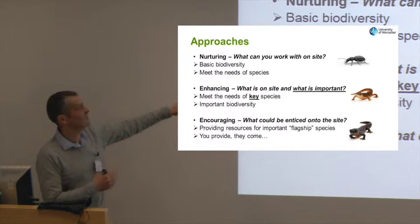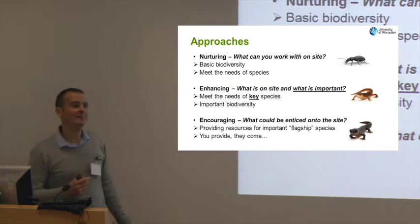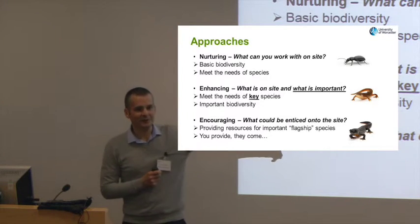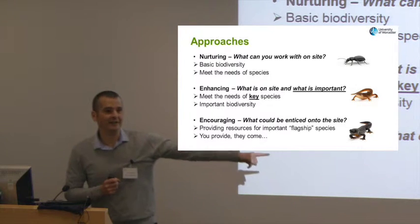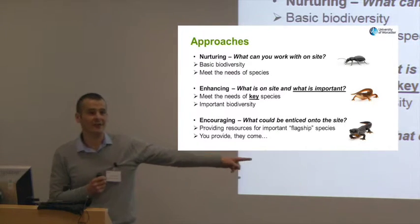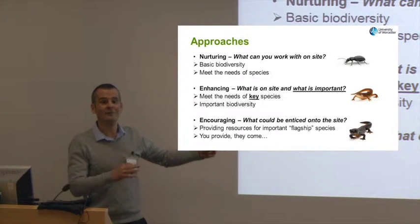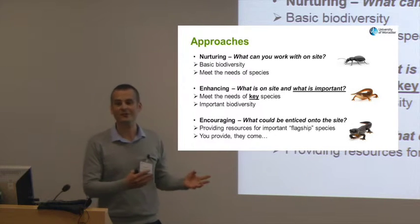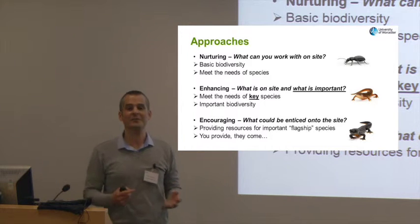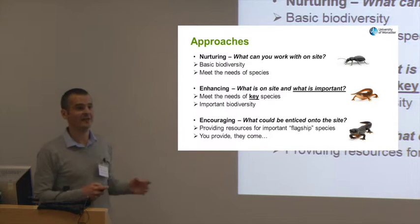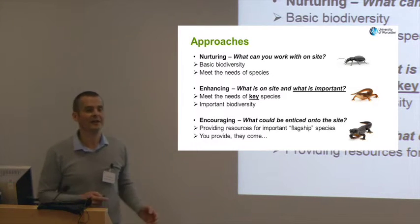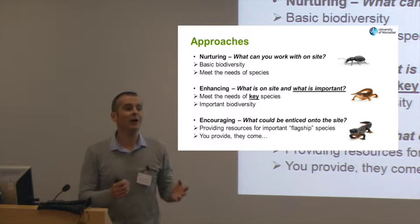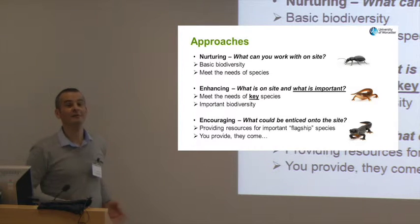The next aspect is encouraging. It may be that you haven't got something on your site but you may want to encourage it. That's a great crested newt. We don't have them on campus yet, but these are flagship species where, if you did entice them onto your site, that could be a really good flagship species to celebrate as a measure of success. It could be bat species or other flagship species as well. This approach is really based on: if you provide it, then hopefully they will eventually arrive at your site.